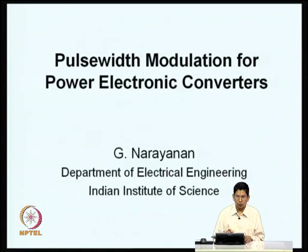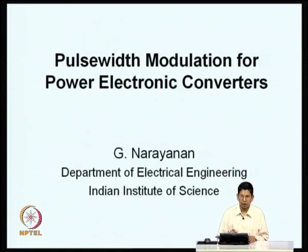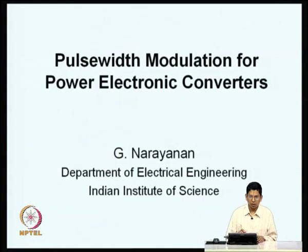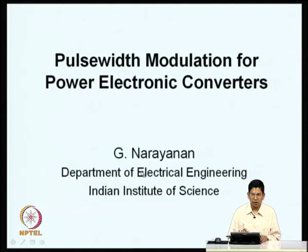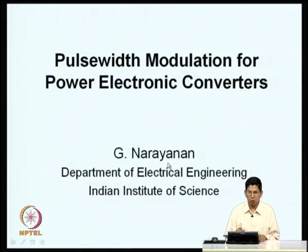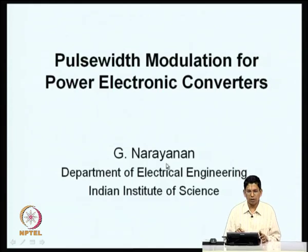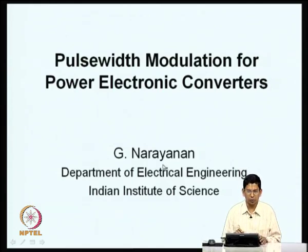Electric power might be available in the form of a DC or AC of a particular frequency and amplitude. You might want AC voltage or DC voltage of another amplitude or AC of some other frequency. We need electric power conversion because many times the load might have a different power supply requirement from what is available. For example, we may have a 230V 50Hz mains available but the load might need a 110V DC, so you need rectification.